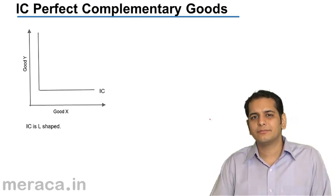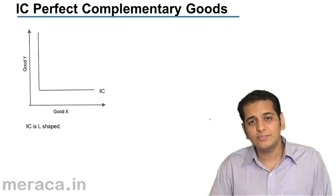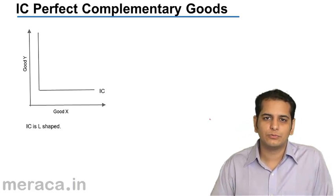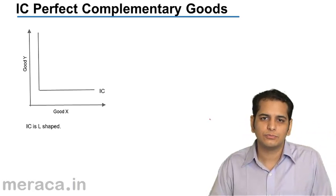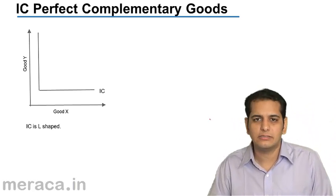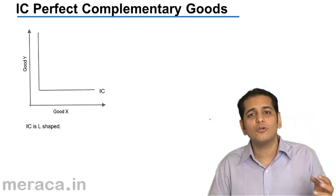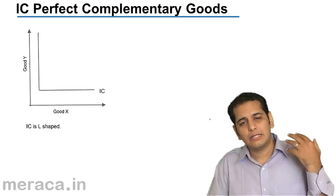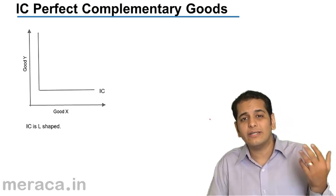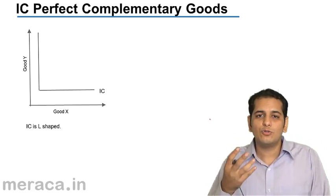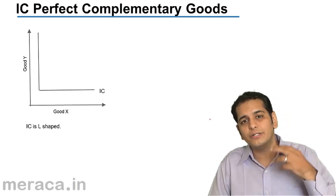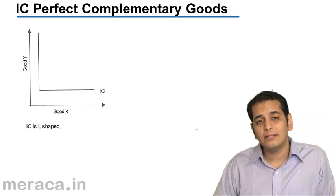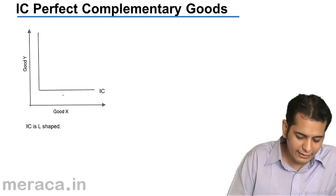But what will happen if I give you an additional right foot shoe, and one more right foot shoe, and one more right foot shoe? Will your satisfaction level increase? No, it won't — because you do not have the left foot shoe. So your satisfaction level remains the same. It does not increase even when I am increasing the quantity of the right foot shoe. What happens is the indifference curve takes an L shape.